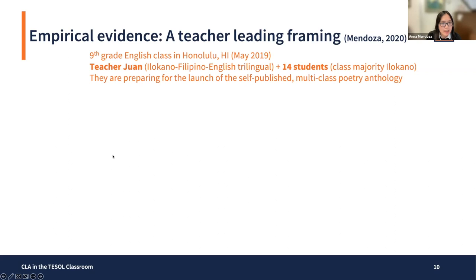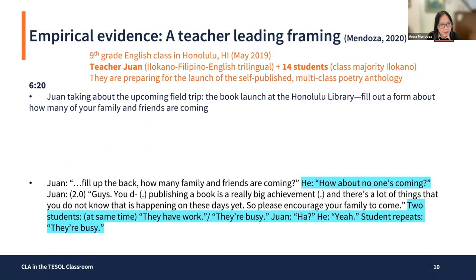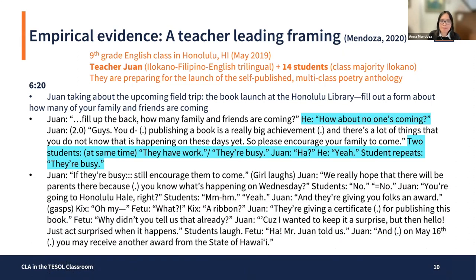They're preparing for the launch of a self-published multi-class poetry anthology. Six minutes and twenty seconds into the morning class, Juan talks about the upcoming field trip — the book launch at the Honolulu library — and says to fill out a form for how many family and friends are coming. A Cantonese boy who largely grew up in Hawaii said, 'how about no one's coming,' which takes Juan aback. After a two-second pause, Juan says, 'guys, publishing a book is a really big achievement. There are a lot of things that you do not know that is happening on these days yet. So please encourage your family to come.' Students say they have work, they're busy. Juan responds: 'if they're busy, still encourage them to come.'